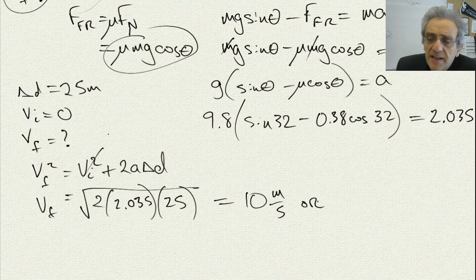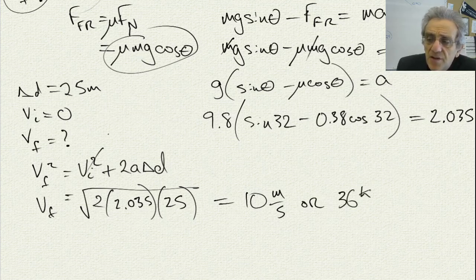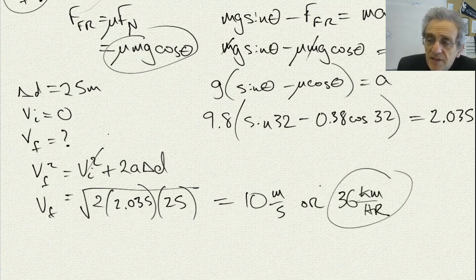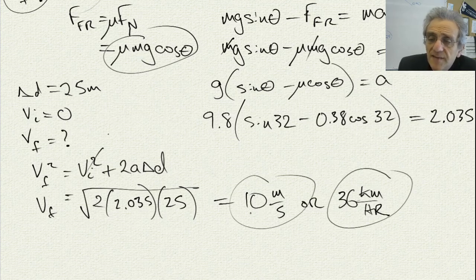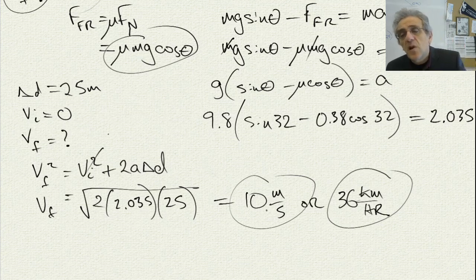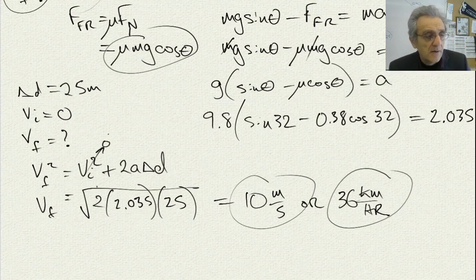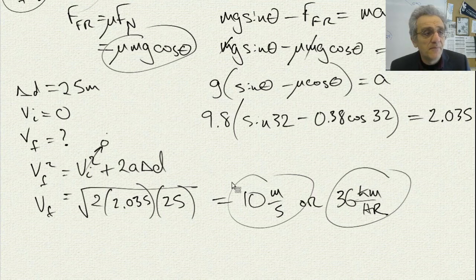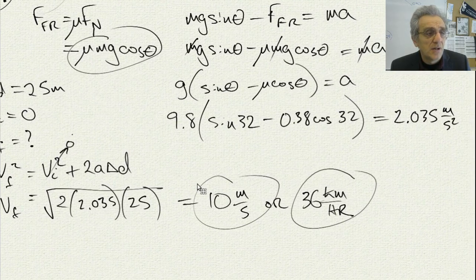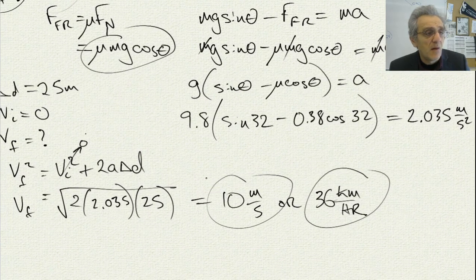And if we want to represent that in kilometers per hour, it's approximately, multiply by 3.6, 36 kilometers per hour. And that's going to be our final velocity at the bottom of the hill. Remember, this initial velocity was zero. Hopefully, that was an easy problem to solve.